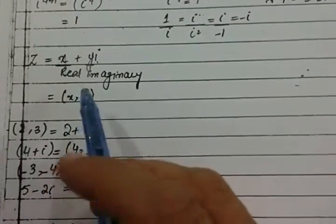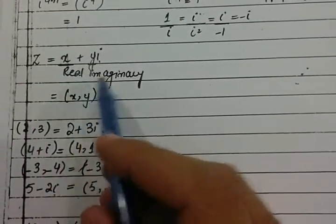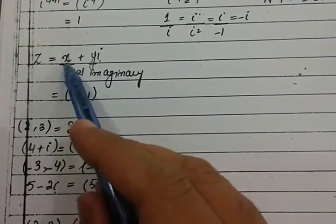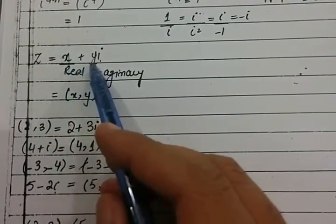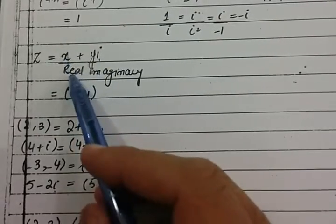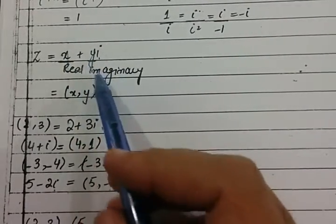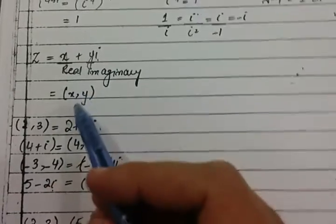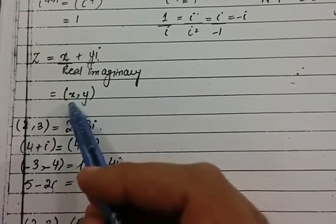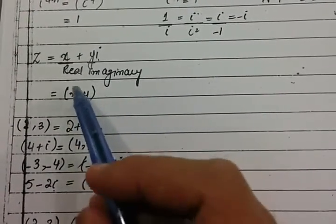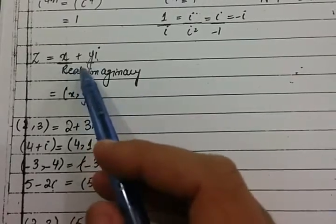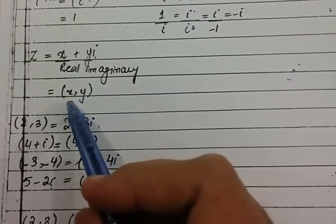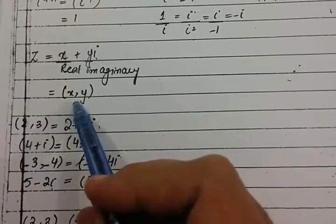A complex number is a combination of a real number and an imaginary number. It is represented in the form of x plus y iota, where x is the real part and y is the imaginary part. It can also be represented as the ordered pair (x, y), which means x plus y iota.